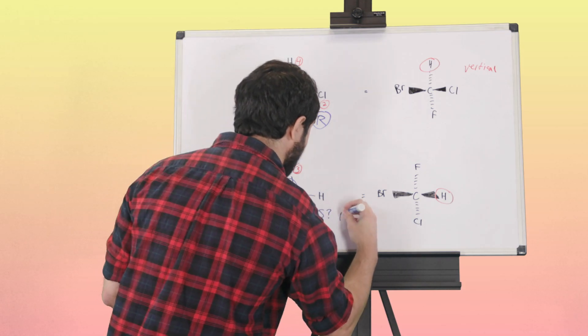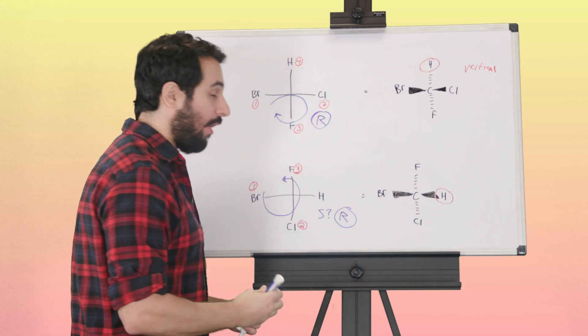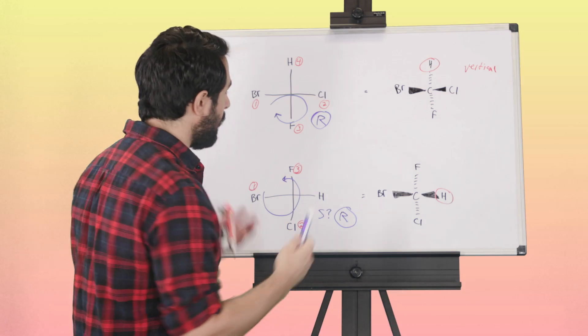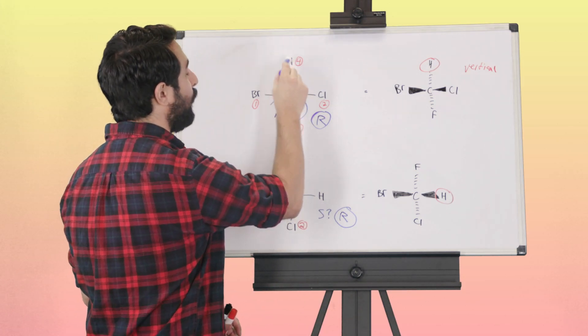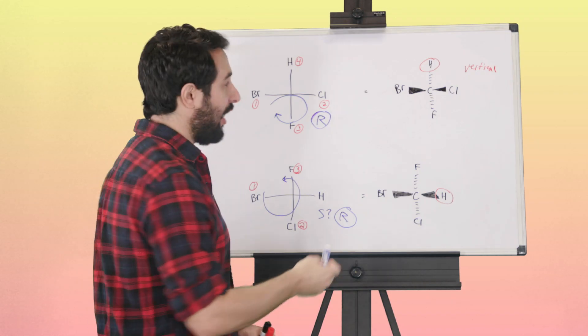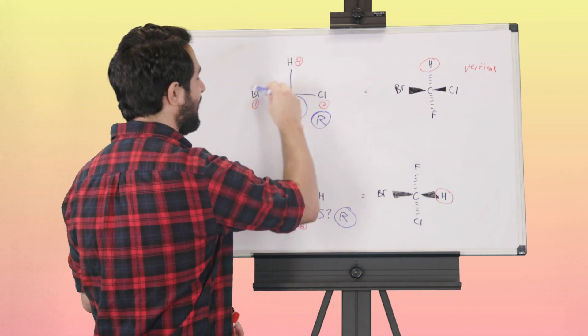So it looks like S, therefore it is R. So this one is also R. Once again, when the lowest priority group is on a vertical bond on a Fisher projection, you can assess R and S as is. Just trace from one to two to three, and clockwise is R, counterclockwise is S.